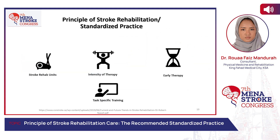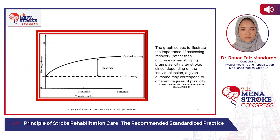The principles of stroke rehabilitation or standardized practice include the stroke rehab unit, intensity of therapy, early therapy, and task-specific training. As seen from the graph taken from the American Heart Association, it illustrates the importance of assessing recovery rather than outcome when studying brain plasticity after stroke, since depending on the individual lesion, a given outcome may correspond to different degrees of plasticity. Three to six months represents what we call the golden period when receiving rehabilitation.